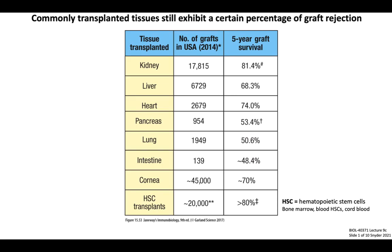Let's start off by looking at the numbers and success rates of various organ and tissue transplants. Transplantation for more common organs has become much more routine in recent decades, thanks to improved surgical procedures, the establishment of transplantation centers and national databases that help coordinate the logistics of matching available organs to compatible patients, and thanks to the advent of powerful immunosuppressive drugs that increase the chances of graft survival. However, there is still room for improvement in terms of preventing graft rejection.